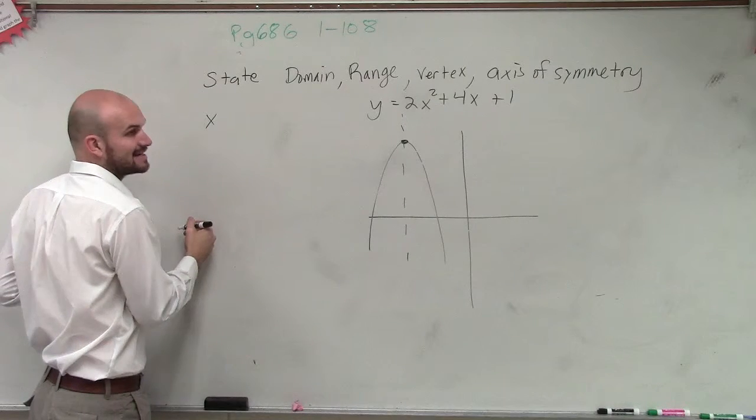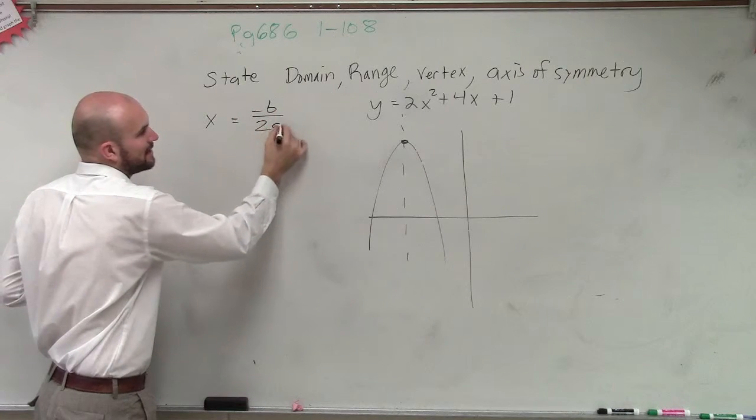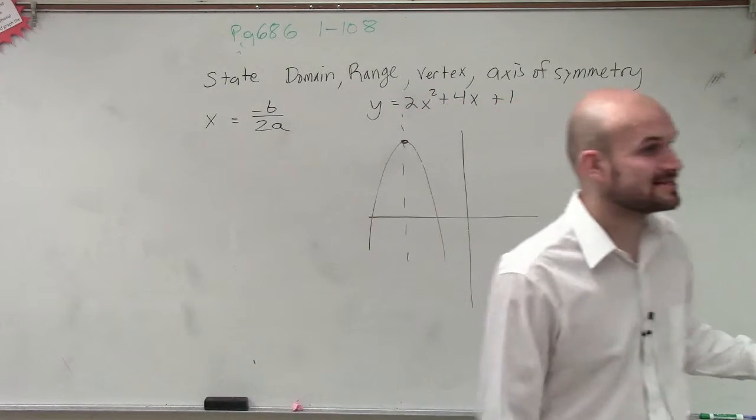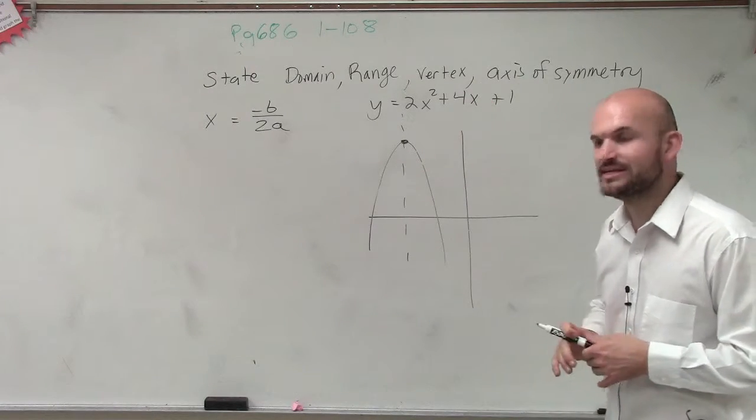Axis of symmetry is x equals opposite of b divided by 2a. So if you want to find the axis of symmetry when given a parabola in this format, just take opposite of b divided by 2a.